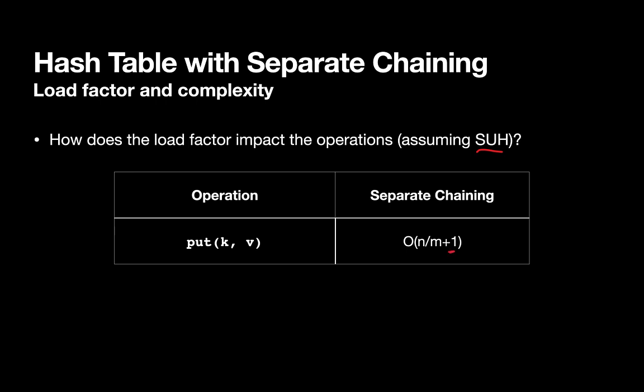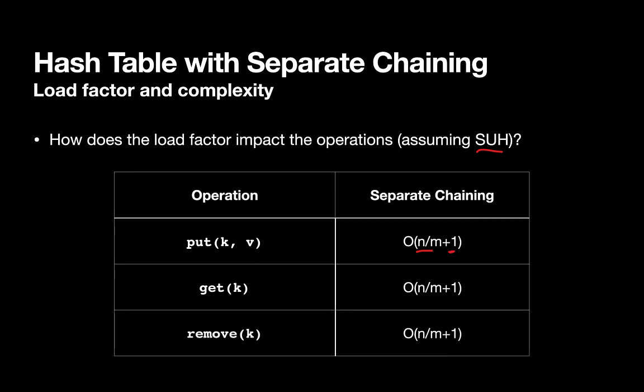Our get, exact same argument, and the remove, exact same argument. All three of these are basically dealing with the contents of a bucket, which is essentially like dealing with our unordered list-based map.